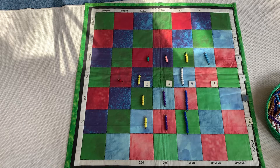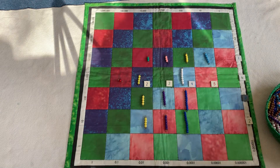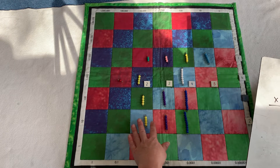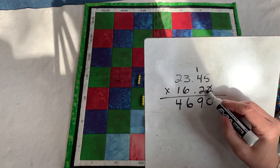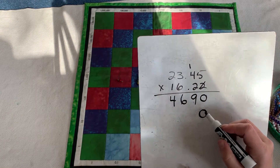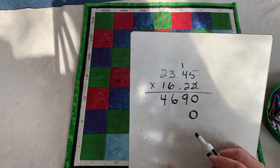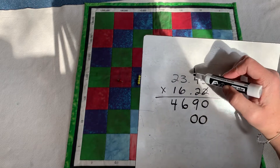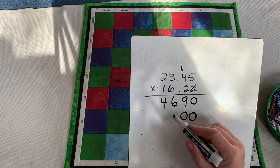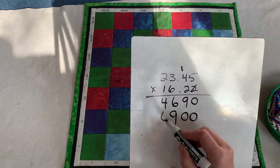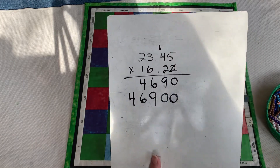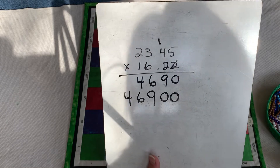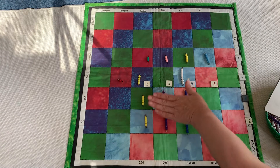Our second partial product is also four, six, nine — but it's moved up an entire level, which means everything is ten times more. We cross off the first one and go up a place value to multiply the whole multiplicand by this two tenths. Two times five is ten, carry one. Two times four is eight plus one is nine. Two times three is six. Two times two is four. So we have four, six, nine, zero repeated — everything just moved over one, which means it's times ten.